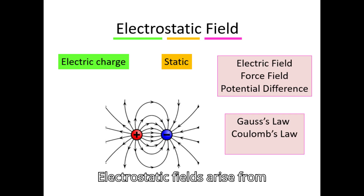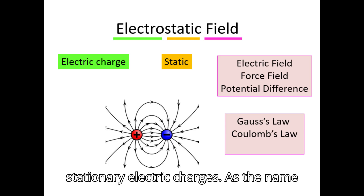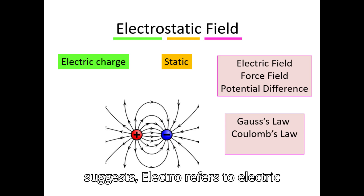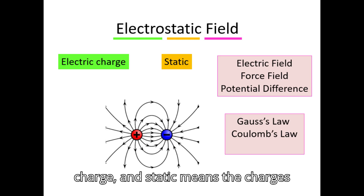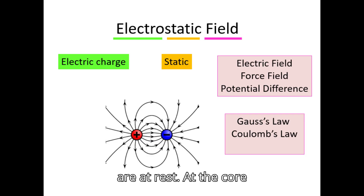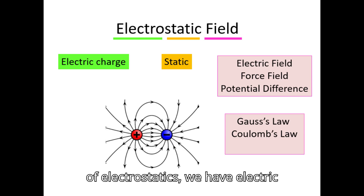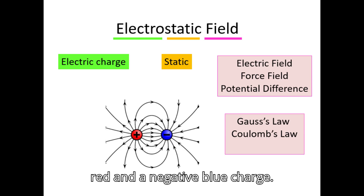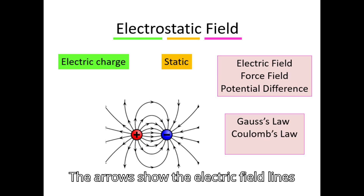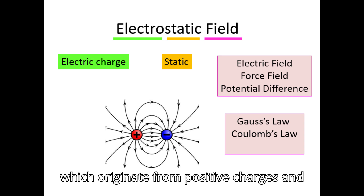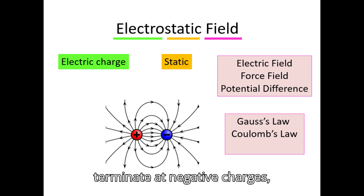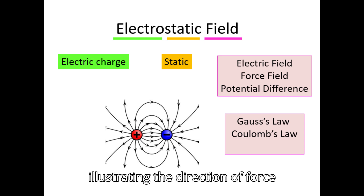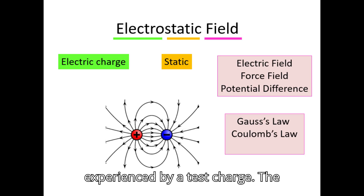Electrostatic fields arise from stationary electric charges. As the name suggests, 'electro' refers to electric charge and 'static' means the charges are at rest. At the core of electrostatics we have electric charges, represented here as a positive red and a negative blue charge. The arrows show the electric field lines, which originate from positive charges and terminate at negative charges, illustrating the direction of force experienced by a test charge.